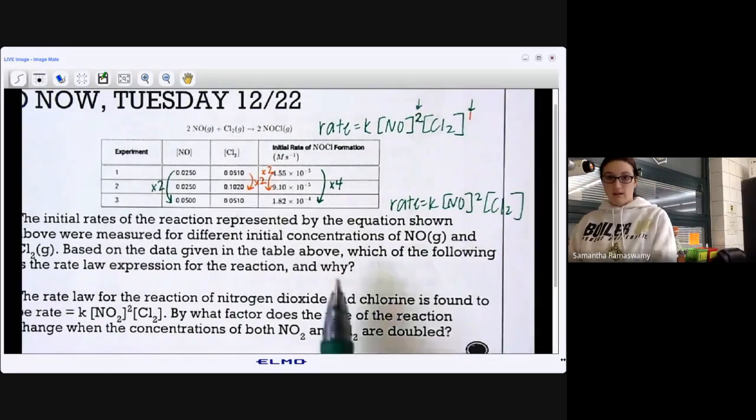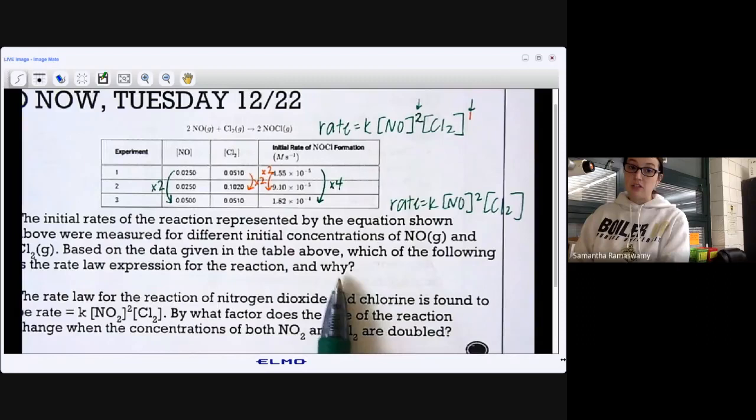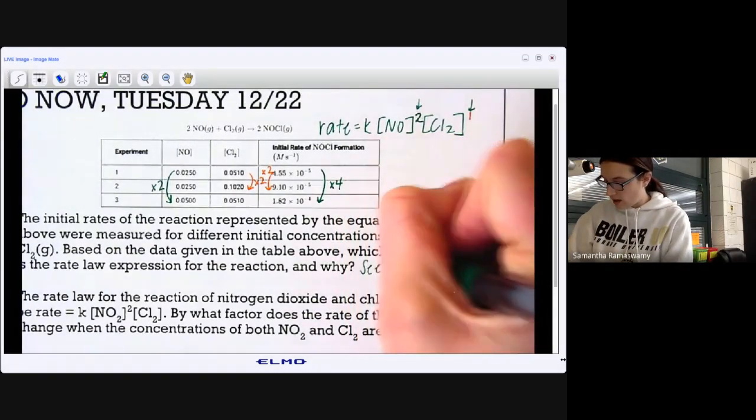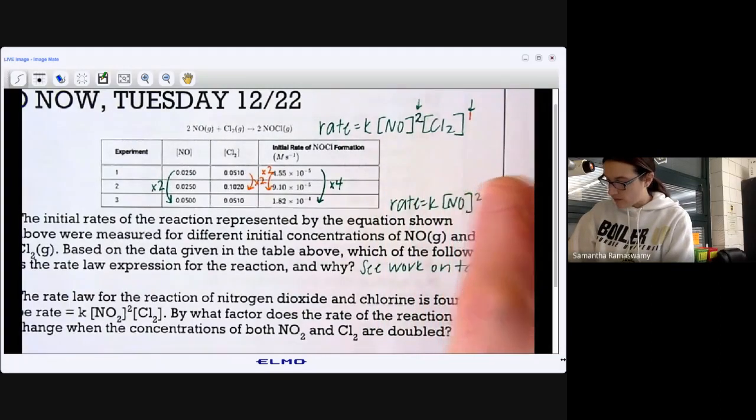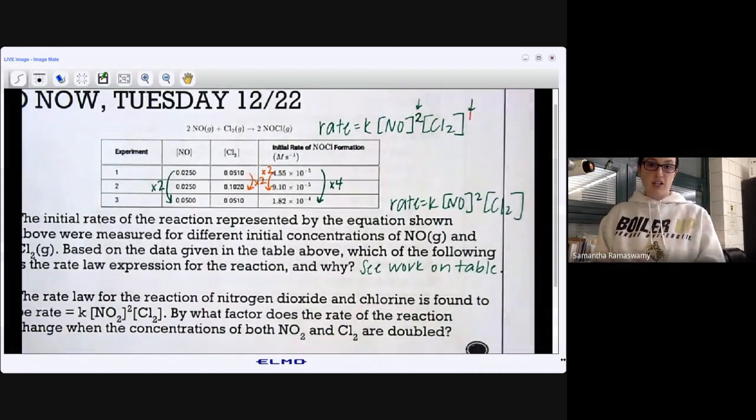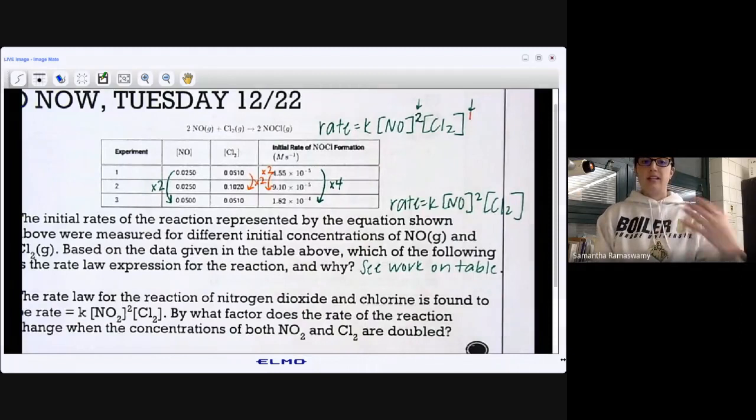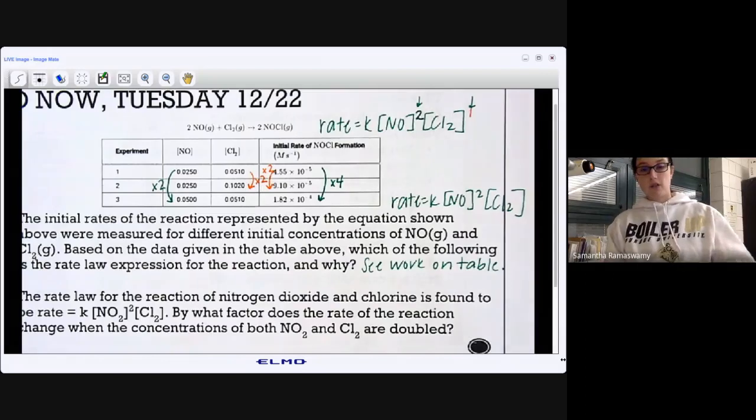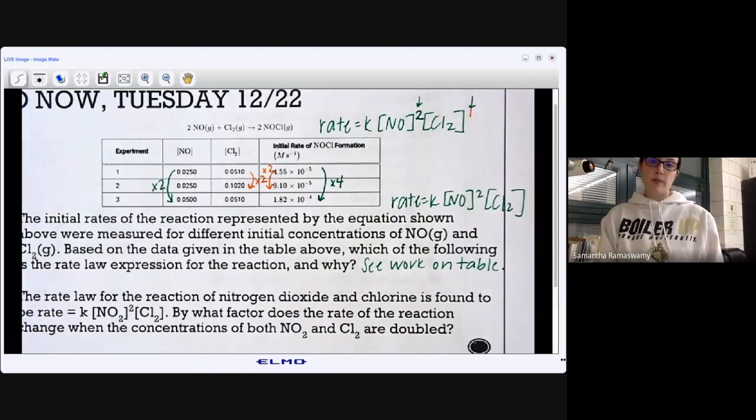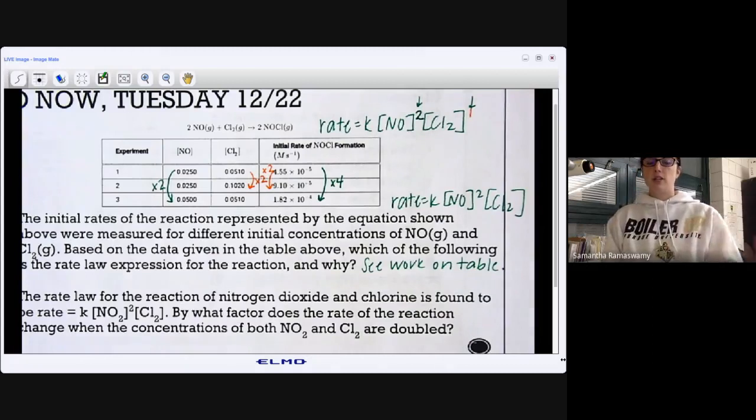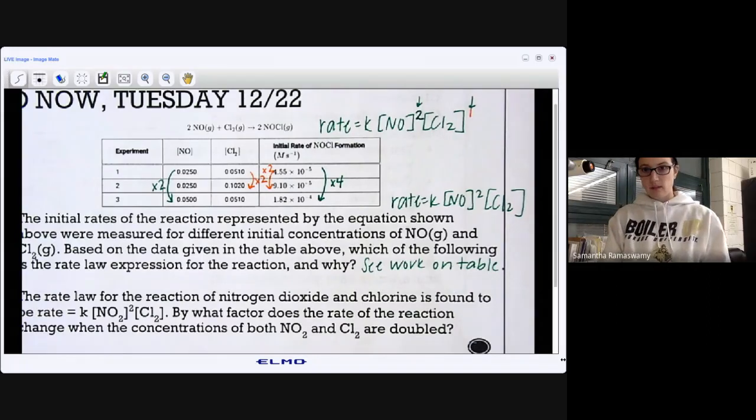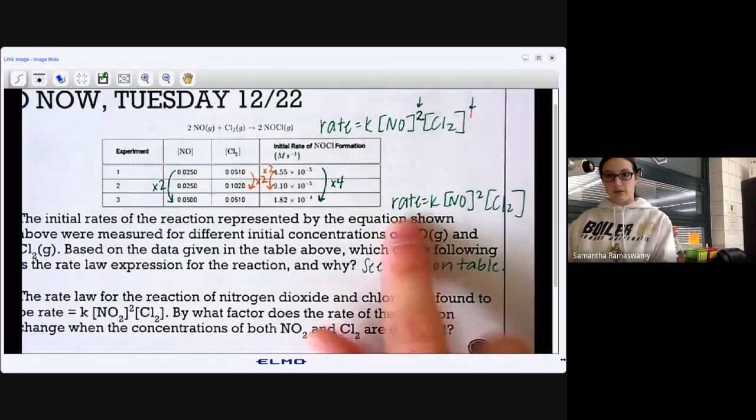Now your why, all right, so this, it could say why, or it could say justify your answer if it was a free response question. I'm going to actually say see work on table. That counts as a justification. Or I could go through and say NO is second order because as I double the concentration, I'm quadrupling the rate. So it's changing by the square resulting in second order. Cl2 is first order because as I double concentration, the rate doubles and that's directly proportional. That's a first order reactant. All right. So either one of those works, but here's your rate law for number one.